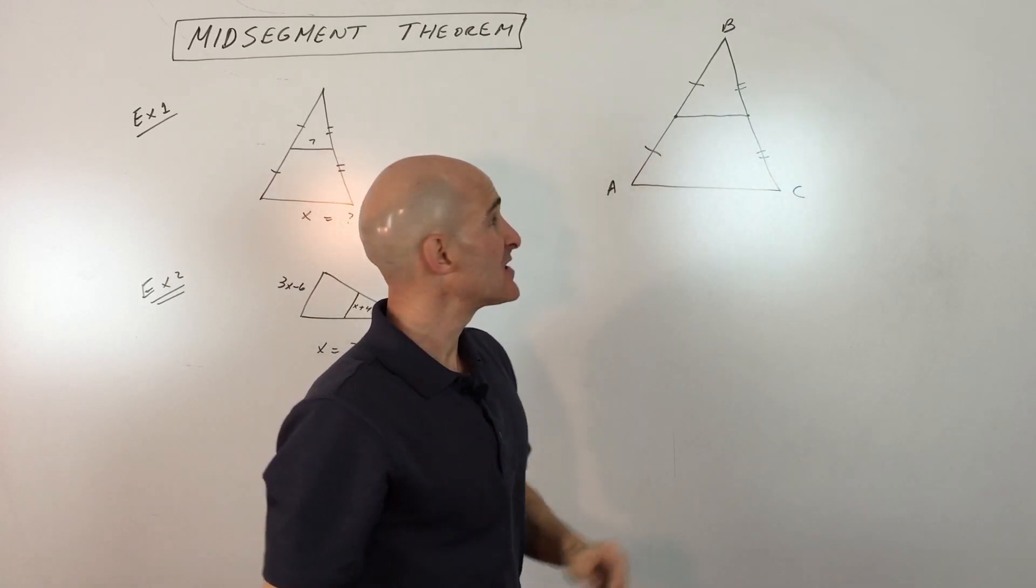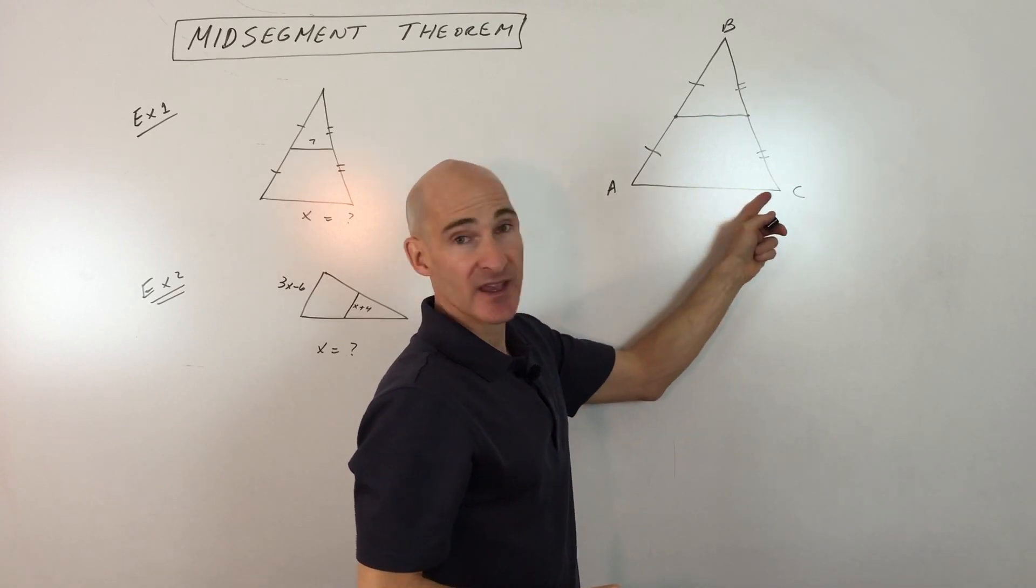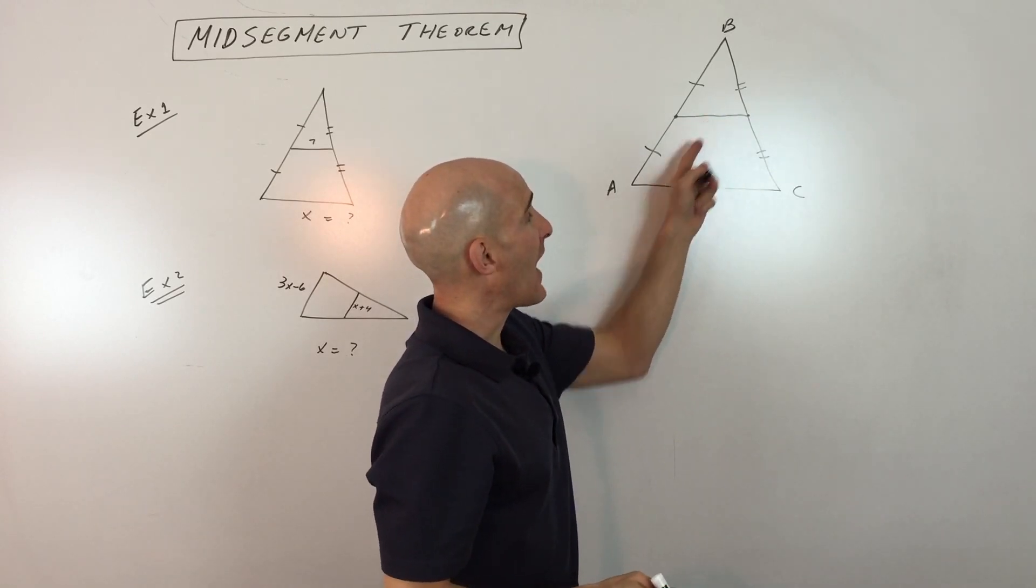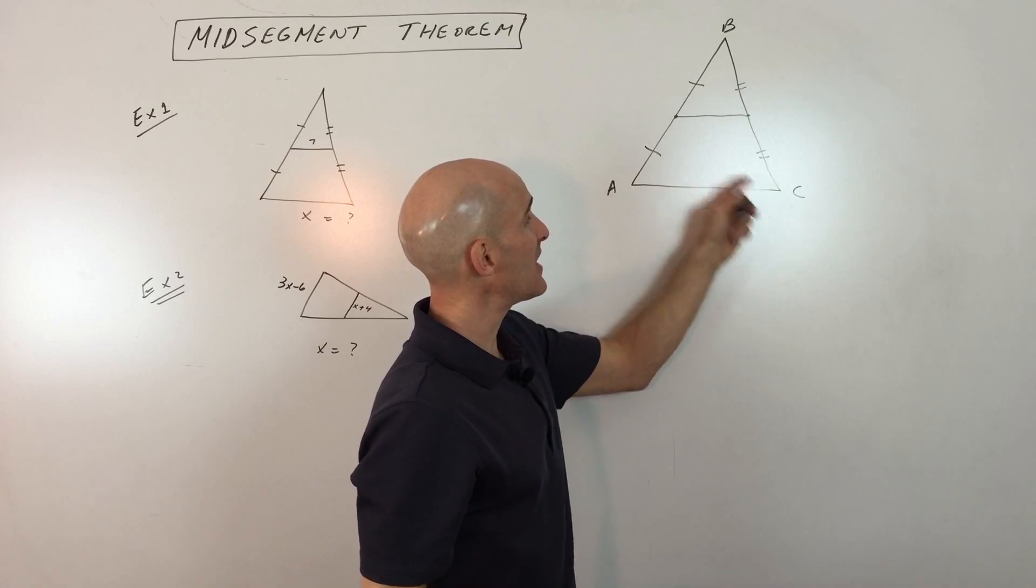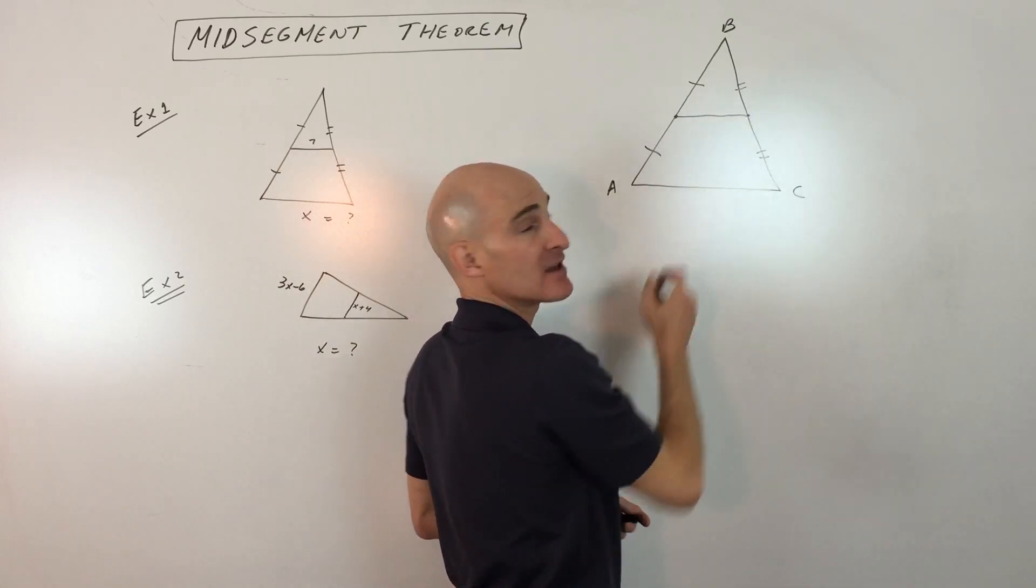The interesting properties of the midsegment are that it's going to be parallel to this third side, to the base, and it's going to be half the length. So if this was 10, this would be 5. So that's the idea - it's parallel and it's going to be half the length.